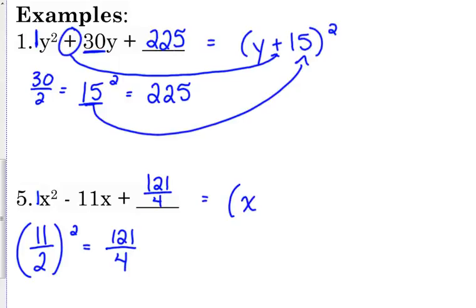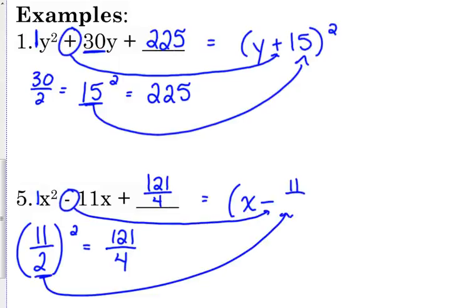So 121 over 4 is the number that completes the square. And then when we factor this, it's going to be x minus, because that was a minus sign right there, and then 11 over 2 is going to be our factor.